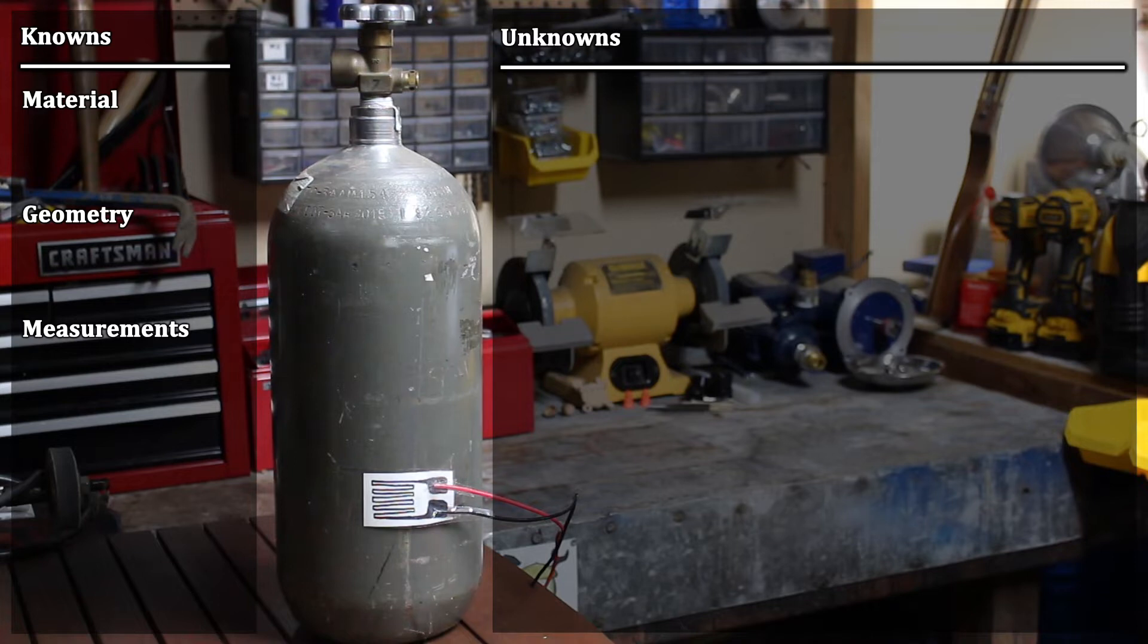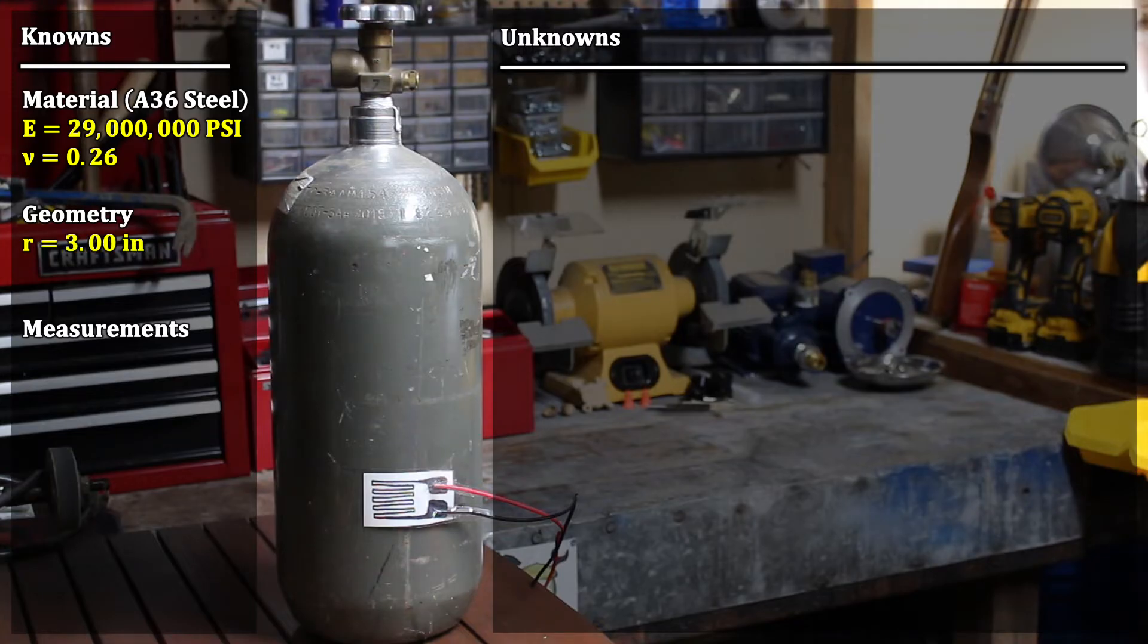This pressure vessel is mild steel, let's say A36. So its elastic modulus is 29 million psi, and its Poisson's ratio is 0.26. The bottle has an inner radius of 3 inches and a wall thickness of a quarter inch. And let's say that our strain gauge is outputting 720 microstrain.